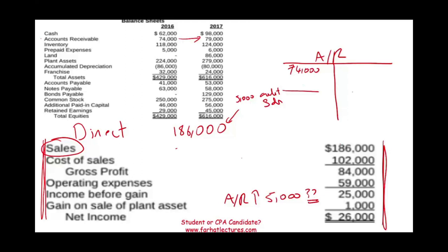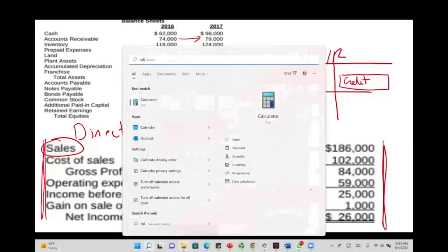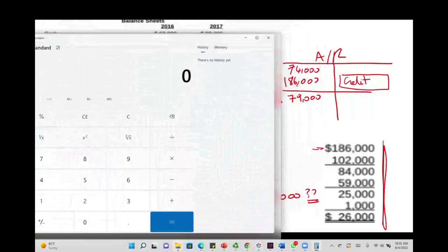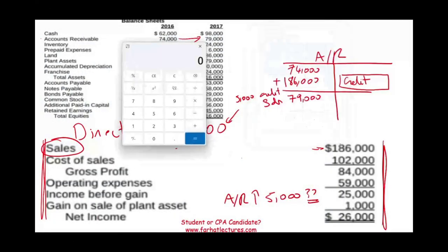The beginning balance is 74 and the ending balance is 79. We also know that sales in total are 186, so sales will increase accounts receivable by 186. Now you want to know how much accounts receivable was credited. Simply put, to go from 74: 74 plus 186 minus something equals 79. Taking 74,000 plus 186,000 equals 260,000. Then minus 79,000, we find out that the credit should be 181,000.